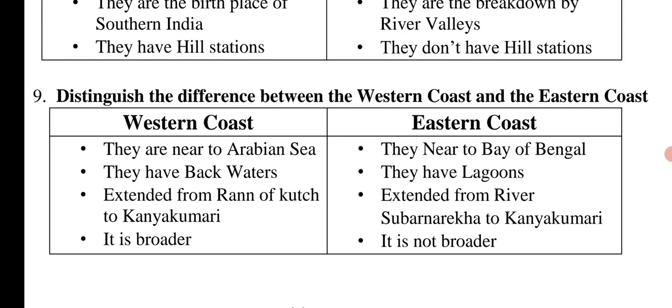Further distinguishing Western and Eastern Ghats: Western Ghats are near the Arabian Sea; Eastern Ghats are near the Bay of Bengal. Western Ghats have backwaters; Eastern Ghats have lagoons. Eastern Ghats extend from Rann of Kutch to Kanyakumari. Eastern Ghats extend from River Subarnarekha to Kanyakumari.